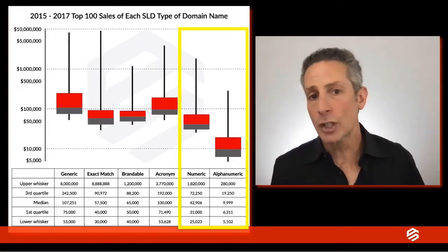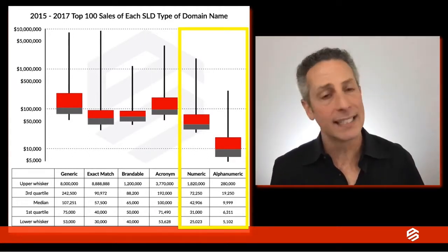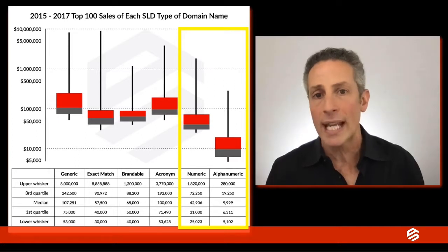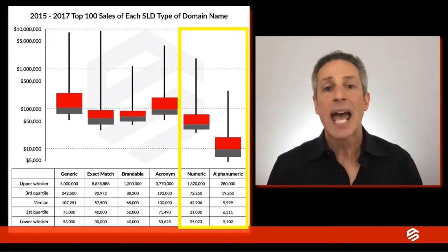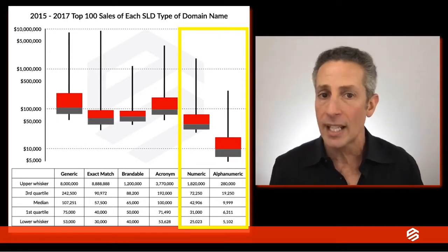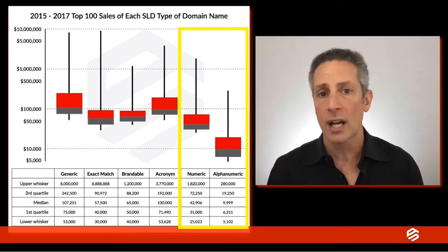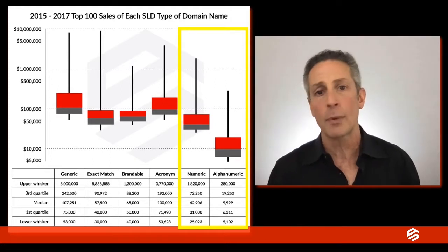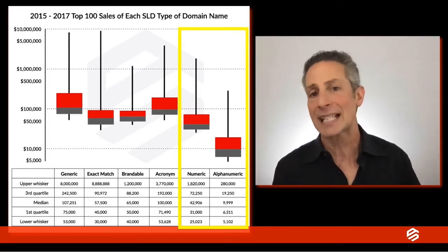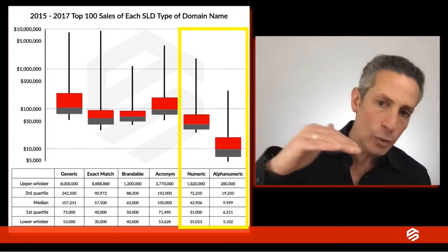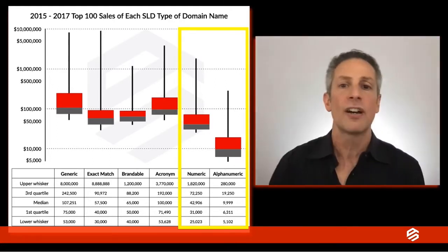Finally, numeric domain names like 0123.com and 8181.com and alphanumeric domain names like w8.com and m33.com round out the asset classes on a downward trend for retail sales figures.